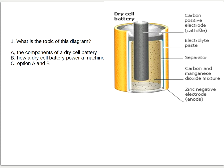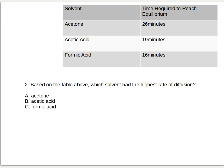So let's go to number two. Question number two, based on the table here above, which solvent had a higher rate of diffusion? Is it A, acetone, B, acetic acid, or C, formic acid? Five seconds to answer. And the answer is letter C, formic acid.